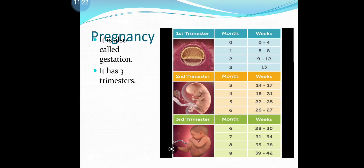Pregnancy, also called gestation. The entire period of pregnancy is from the day of fertilization to 280 days. It has three trimesters. The first trimester is up to three months. It is a time of most radical changes in mother and embryo. The embryo receives nutrients from the endometrium directly.